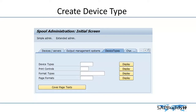Moreover, when you create this device type you can also define the format of the page. In there we can define the cover pages. For example, when you are printing to a specific printer then you need to have a cover page, or you may want a print page — how it looks. These are all things that can be defined in the device types.